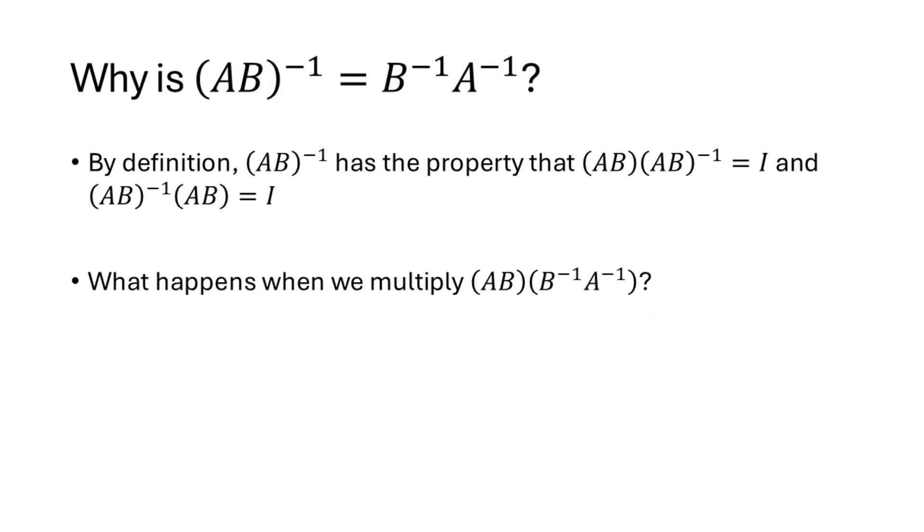Instead, if we put B inverse A inverse there, now the B and the B inverse are next to each other. So BB inverse is IN. Multiplying by the identity matrix just gives you back the matrix that you started with, and then A times A inverse is again IN, and so that's why AB times B inverse A inverse is the N by N identity matrix.